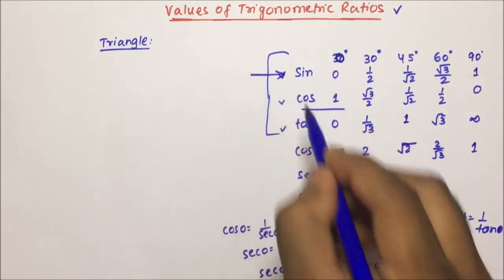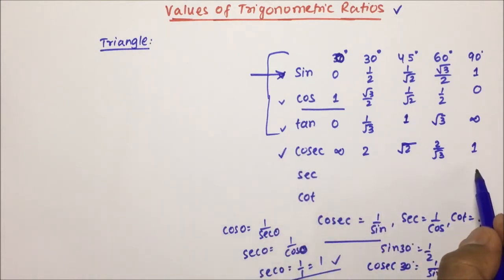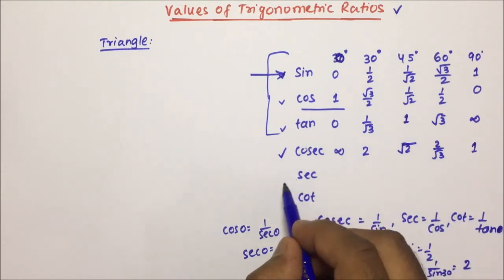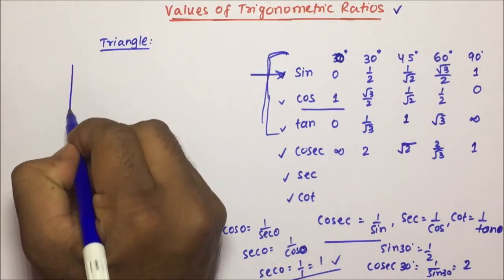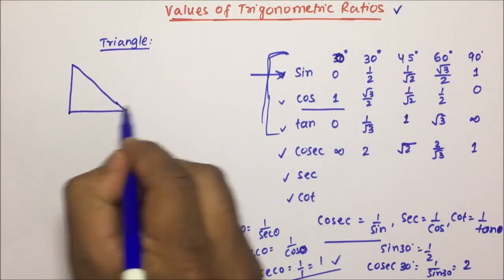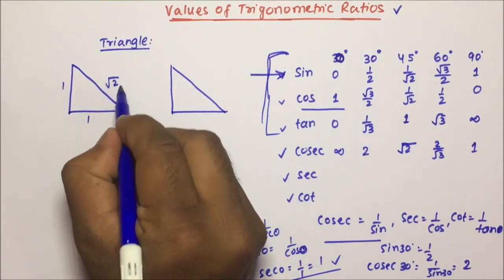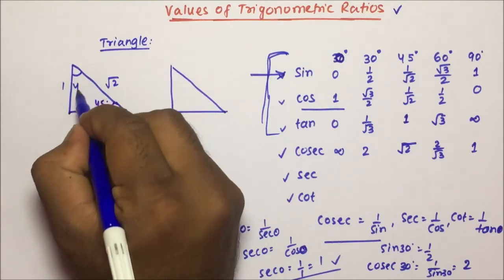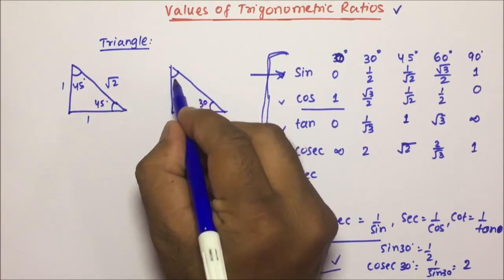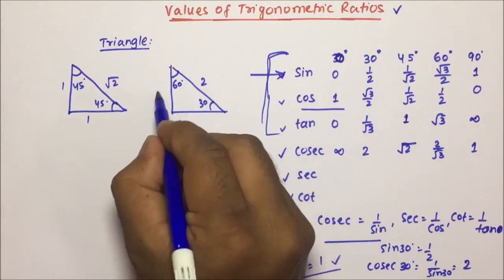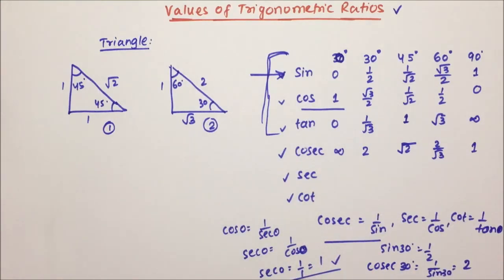If you know how to get the values of sin 0, 30, 45, 60, and 90, then you can easily get the value of cosec and all angles. In the similar way, sec and cot. Either you remember these things, or I am going to tell you using triangles how to calculate. You make 2 right-angle triangles: one with sides 1, 1, √2 and angles 45°, 45°, and another with sides 1, √3, 2 and angles 30° and 60°.